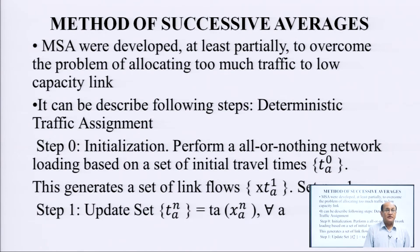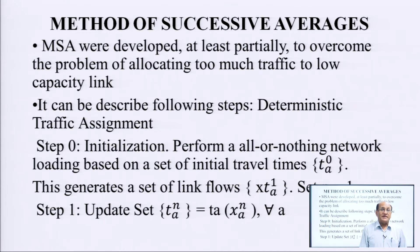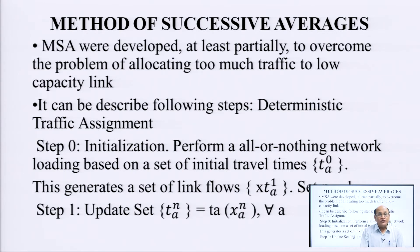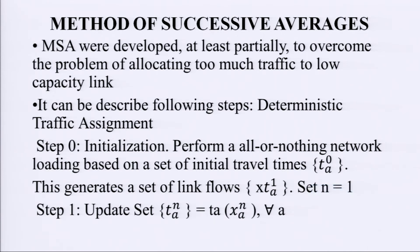Method of successive averages (MSA) was developed at least partially to overcome the problem of allocating too much traffic to low-flow capacity links. Step 0 initialization: perform an all-or-nothing network loading based on a set of initial travel times T(a,0). This generates a set of link flows X(a,1) and sets N = 1. Step 1 update: set T(a,N) = T(a)(X(a,N)) for all values of a.